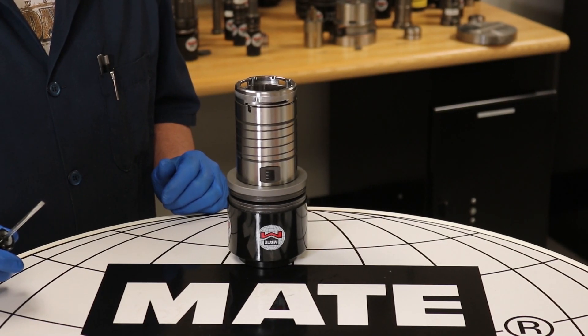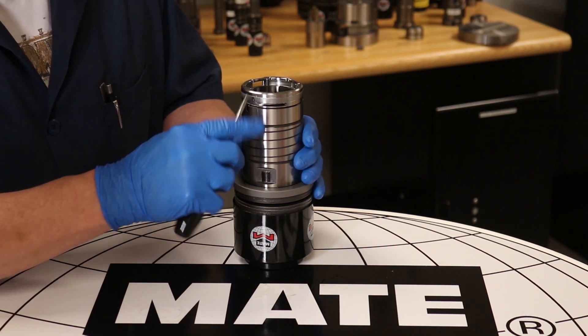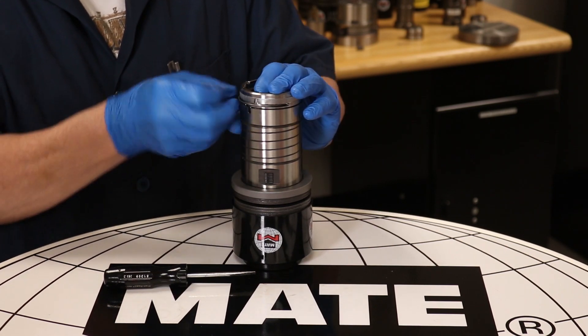First, we'll use a small flathead screwdriver to remove the retainer ring. Using your free hand, apply pressure to the lock ring at the top of the assembly. Pull the retainer ring from the assembly using your fingers.